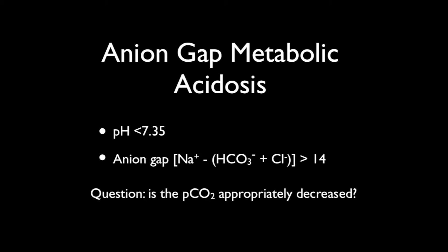In an anion gap metabolic acidosis, you're looking for a low pH and an anion gap. The question is, is the PCO2 on your venous blood gas appropriately decreased?